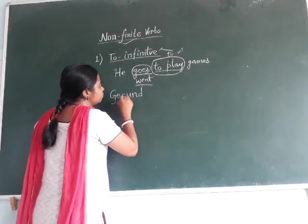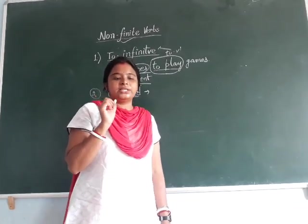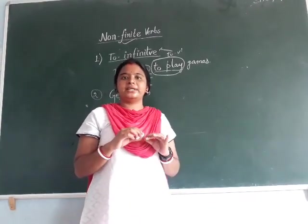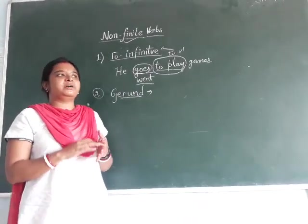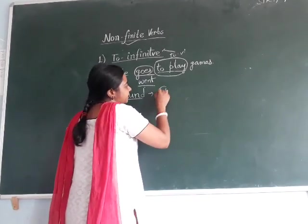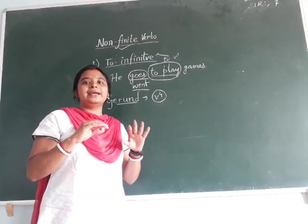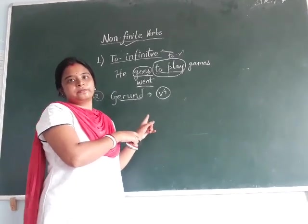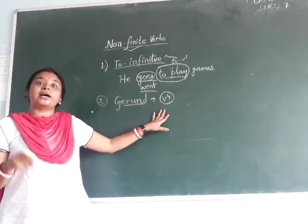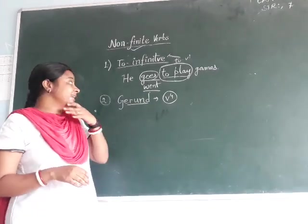The next type is gerund. I think you have gone through this word in your sixth or seventh class. Now, see — you have already read the lesson on verbs, right? There are different verb forms: V1, V2, V3, V4. The V4 form comes in general use, but not as a verb. For example, 'I am writing on the board now' — here 'writing' is used as a verb. But when these ing forms are not used as a verb and are used as a noun in a sentence, then it becomes a gerund.